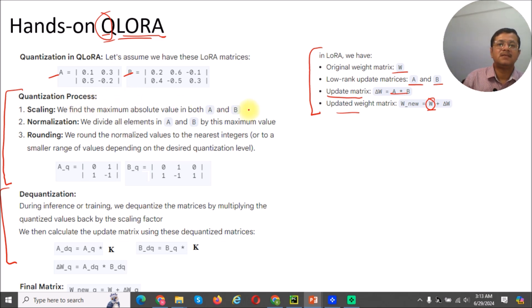So how it reduces? First is the scaling. We find the maximum absolute value in both A and B. So here you can find that this is the maximum value, 0.6.